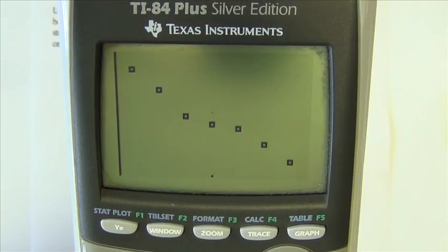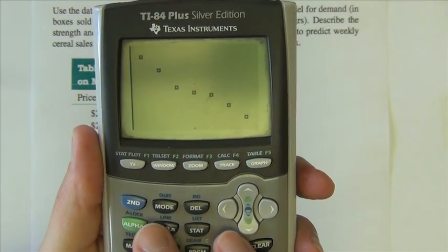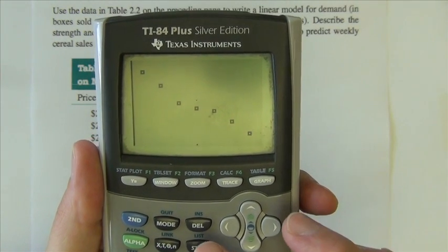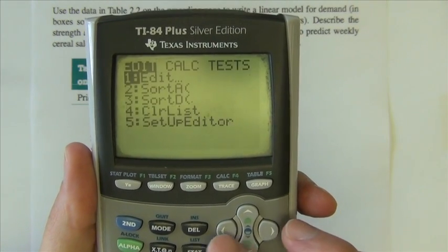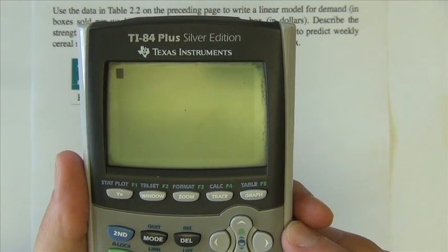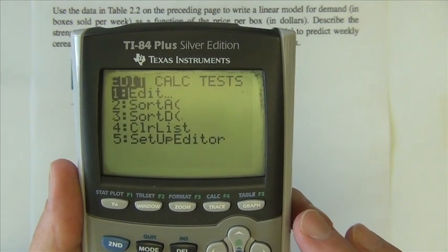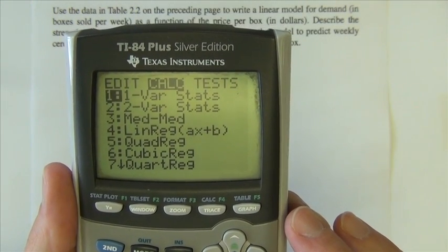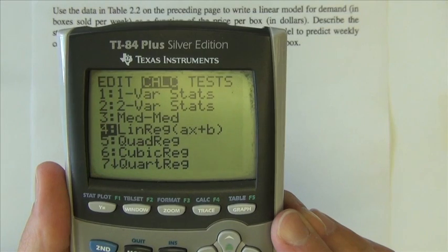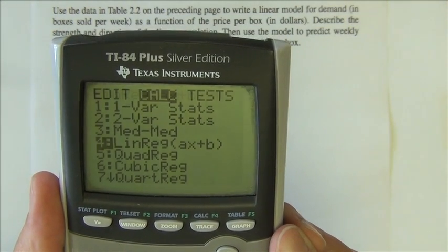Now what we need to do is find the equation of the line, the best fit line that goes through there. We can do that all in the calculator as well. I'm going to go back into STAT, calculate, arrow down to number 4 - it says LINREG, it stands for linear regression - hit enter.